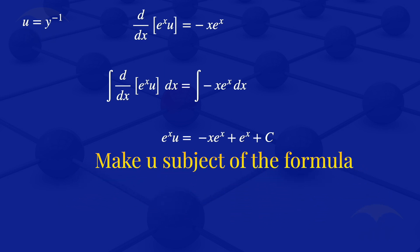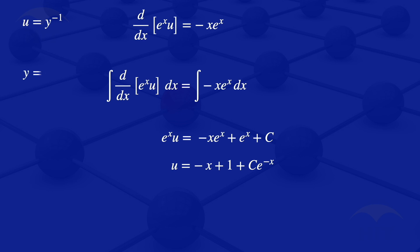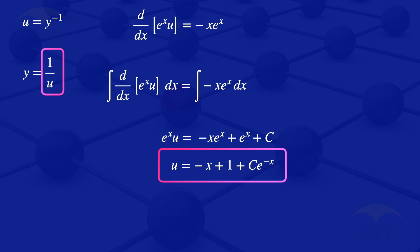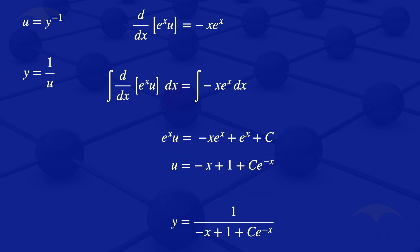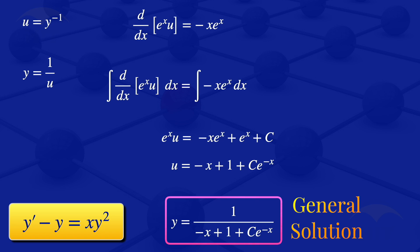The next step is to make U the subject of the formula. Dividing throughout by exponent of X gives us U is equals to minus X plus 1 plus C multiplied by exponent of minus X. Recalling our substitution U equals Y to the power minus 1, we have Y equals 1 divided by U. Substituting our expression for U, we get Y is equals to 1 divided by (minus X plus 1 plus C multiplied by exponent of minus X). This is the general solution of the ODE Y prime minus Y equals X multiplied by Y squared.